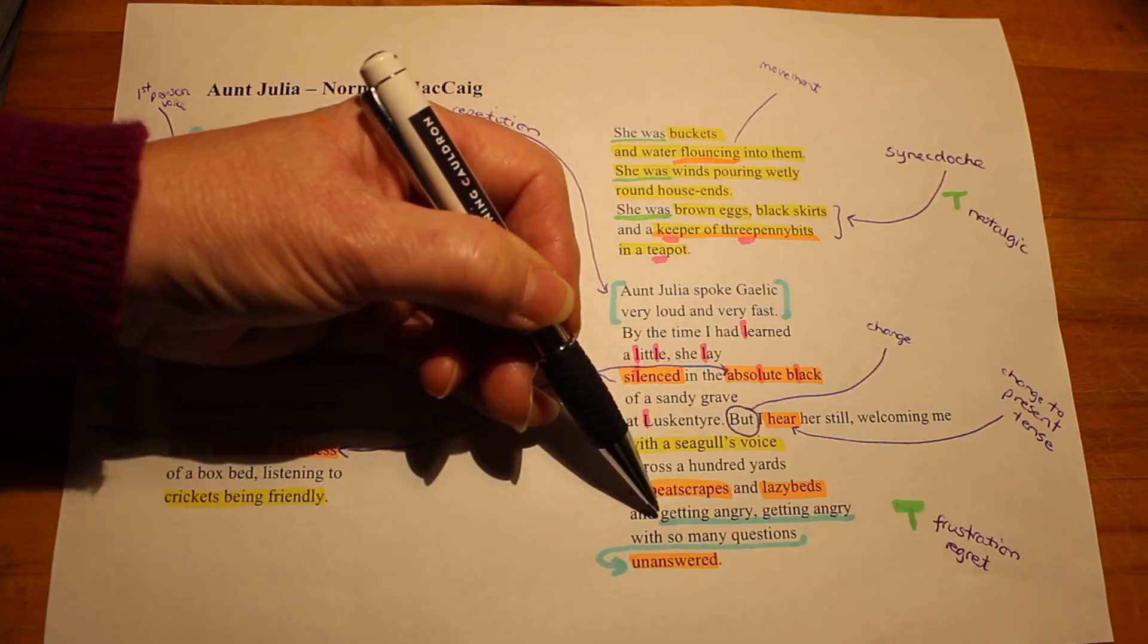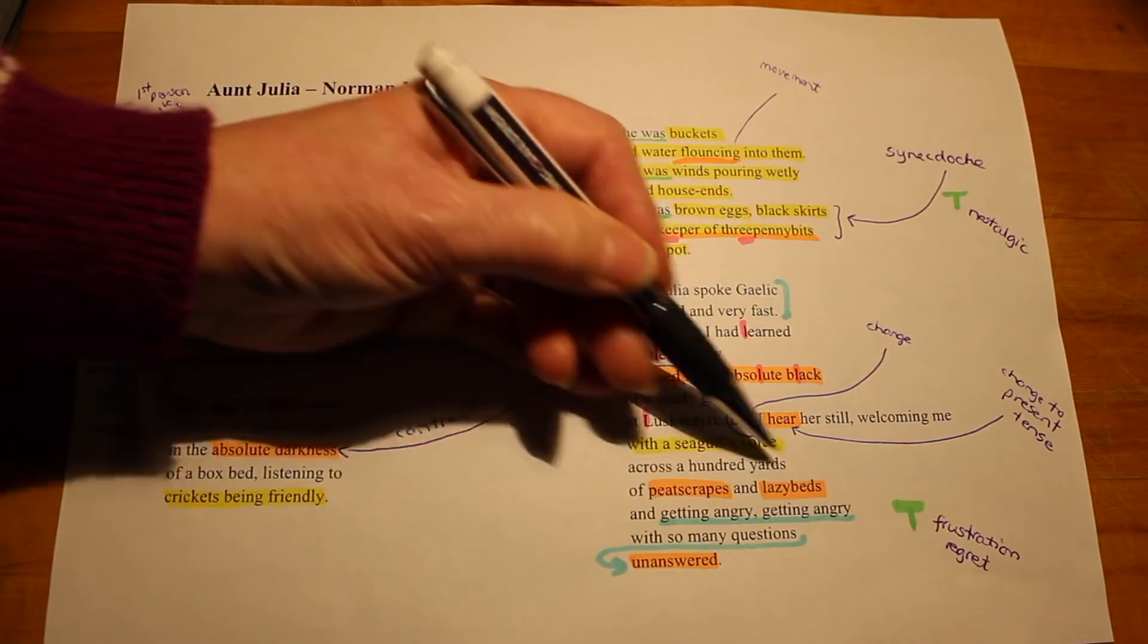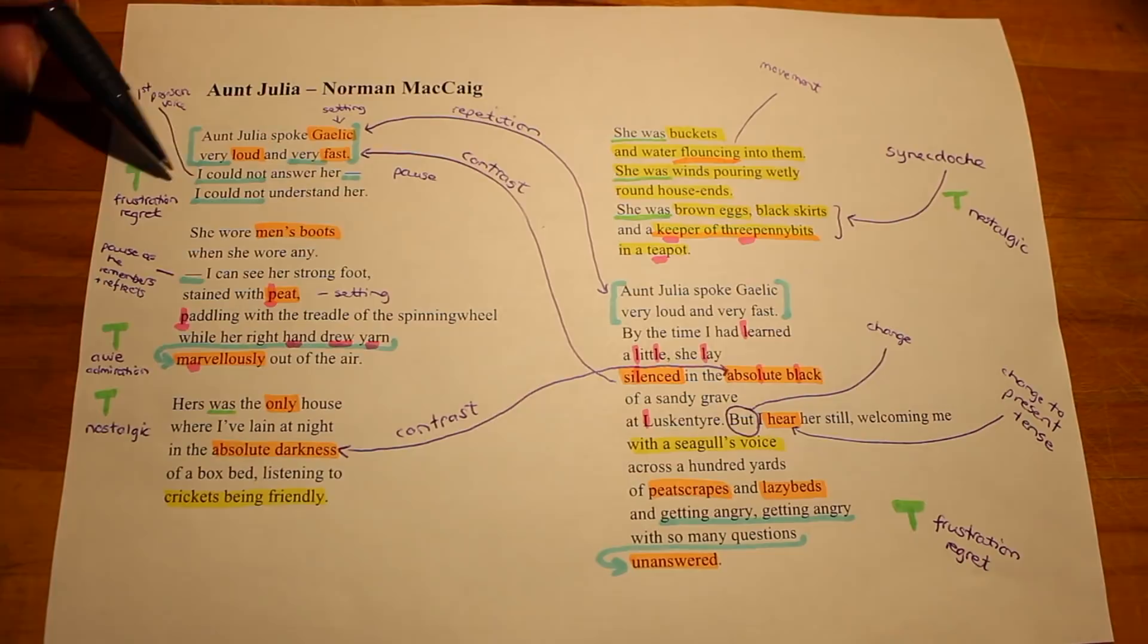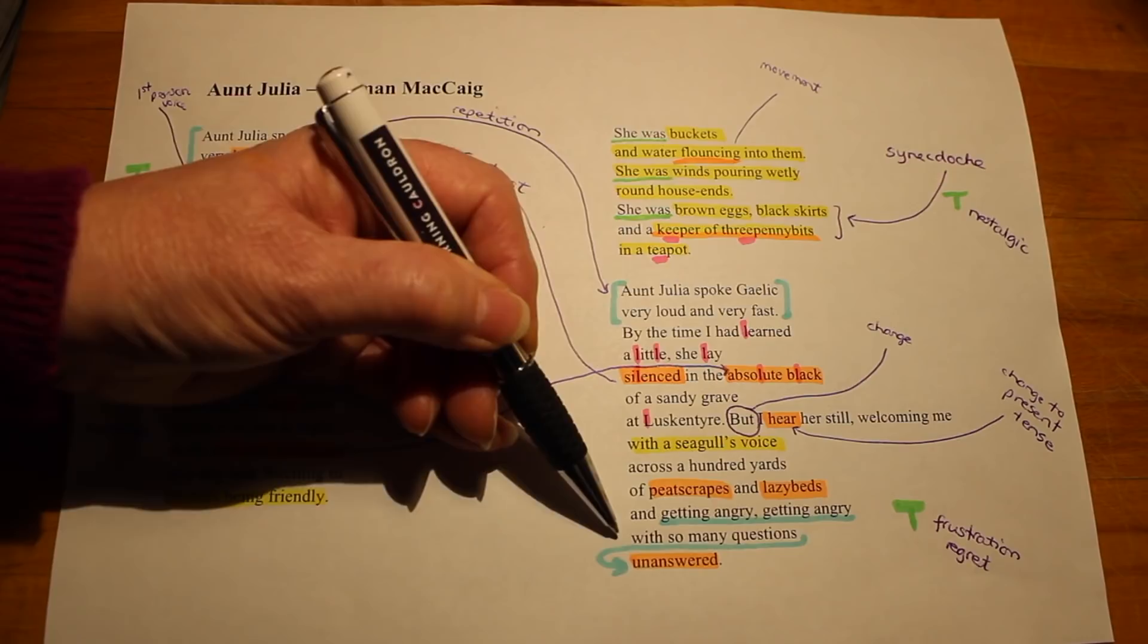And then we have the repetition of getting angry, getting angry. And it's almost as if both he and she, the seagull's voice, is becoming angry, but he is also angry. And this tone of frustration, which we had at the beginning here, I could not, I could not, returns again through the use of repetition because he realizes that there will now be so many questions.